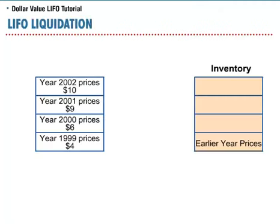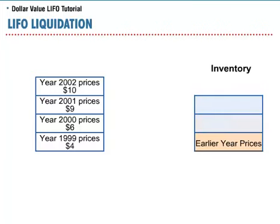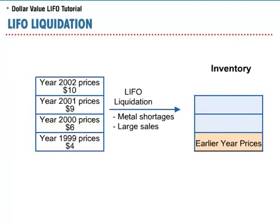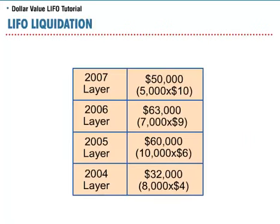As can be seen from the unit cost information, the cost of steel has increased over the four-year period. For whatever reason, Labatt Company was forced to sell much of its inventory — this may have been the result of an unexpected increase in sales or due to worldwide metal shortages. In either case, because Labatt had to sell much of its inventory, it experienced a LIFO liquidation. After the liquidation, at the end of 2002, only 6,000 tons of steel remained. Because Labatt is using LIFO, the last steel purchased is the first steel out the door when there is a sale, so the most recent layer is liquidated first.